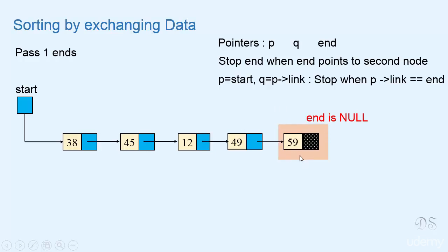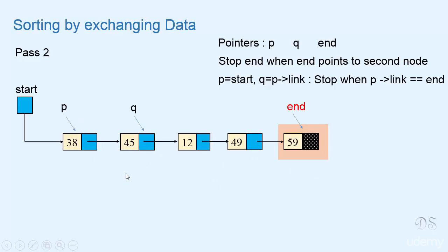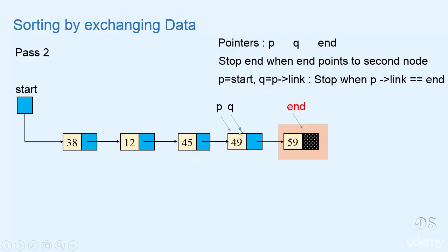At the end of pass one we can see that this portion has become sorted. In pass two, end will point to the node where p had stopped in the last pass. We'll initialize p with start and q with p-link. We'll compare these two — no need of swapping. We'll move p and q forward. We need to swap. We'll move p and q forward. Again there's no need of swapping. We'll move p forward. Now p-link has become equal to end, so we'll stop. This is the end of pass two, and at the end of pass two this portion has become sorted.